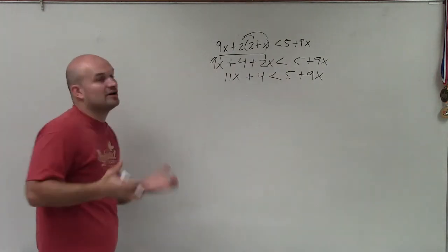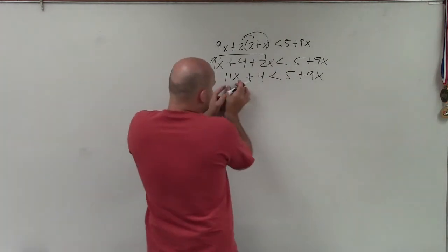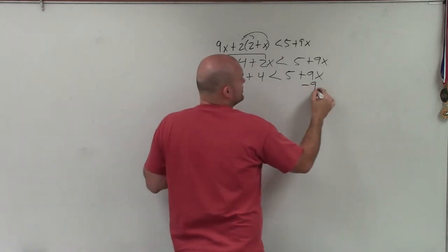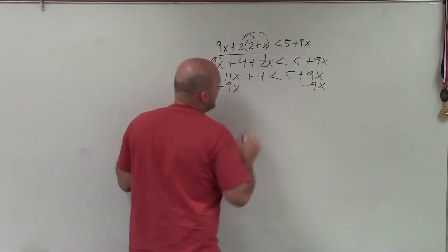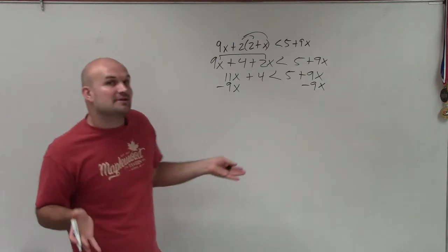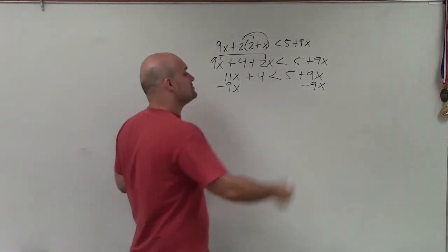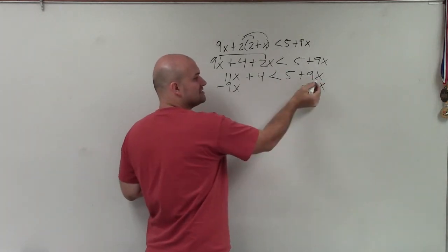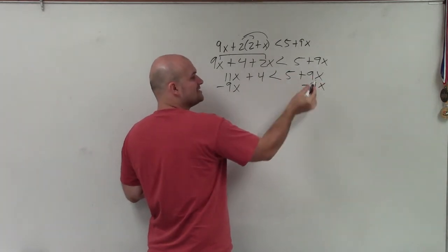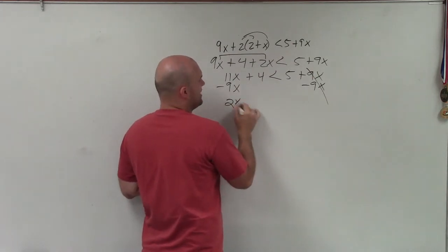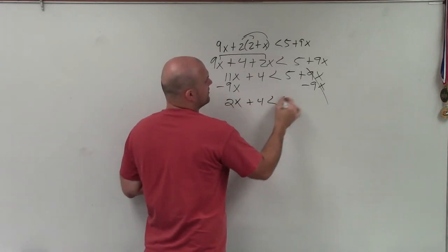Now, all I simply need to do is get my variables to the same side. So I have 11x on the left side and 9x on the right side. So you just need to decide which side do you want to get them to? Well, I'll decide to get them to the left side, because usually we like kind of left side like you read left to right. So to do that, I'll just subtract the 9x on both sides. When I subtract the 9x on the right side, that goes to 0. And I'm left with 2x plus 4 is less than 5.